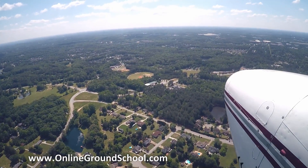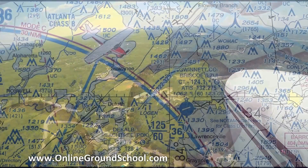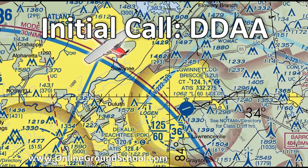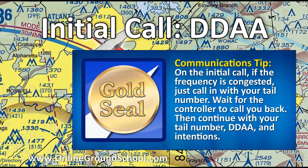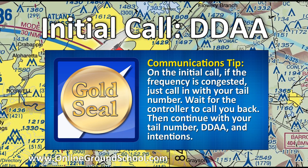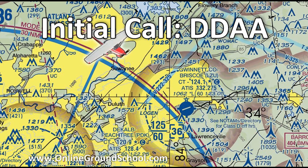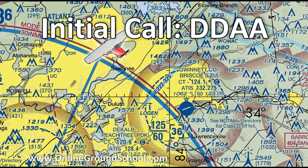We're about nine miles out now. We're going to call the tower and give them our distance, direction, the ATIS letter we have, our altitude, and our intentions. We'll switch over to Gwinnett Tower's frequency. Remember the mnemonic: D-D-A-A — distance, direction, altitude, and ATIS letter. Gwinnett Tower, Skyline 4274 is nine miles northwest at 2,800 with X-ray, landing and going to the restaurant.